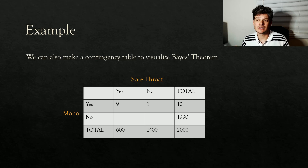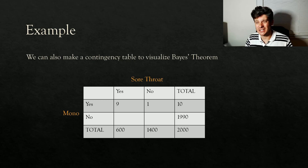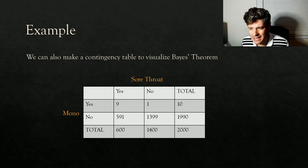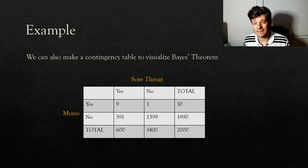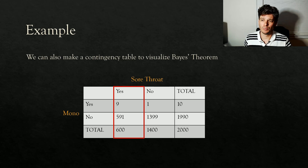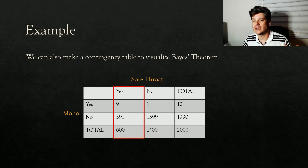Now we can fill in the rest of the table. I already knew that of the 10 students with mono, 9 did have a sore throat and 1 did not. For the 1,990 students without mono: 591 had a sore throat but did not have mono, and 1,399 did not have a sore throat and did not have mono. Then we simply look at the column we want for our conditional probability — we know the student has a sore throat, so we look at the sore throat column. How many have mono? It's 9 out of 600 — we get back to the same answer.